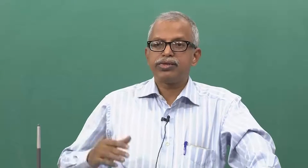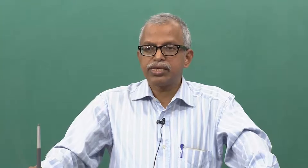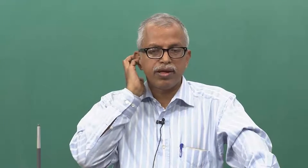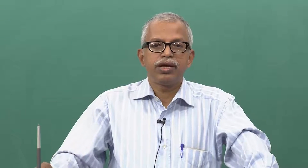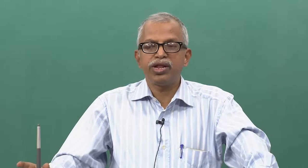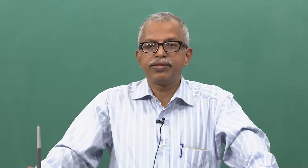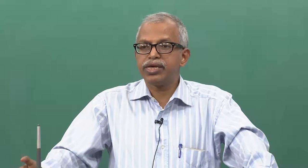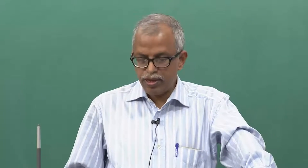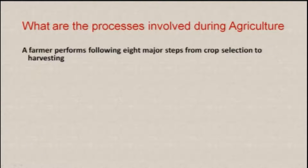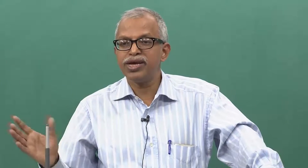Before getting into that, let us look at what processes are involved during farming. If you want to grow rice, wheat, paddy or anything else, what are the things you need to look at? Students mention: selection of soil, seed selection, availability of water resources. If you want to be a farmer, you will have to look at eight major stages, from crop selection to harvesting. Today we are being swayed by profit alone.